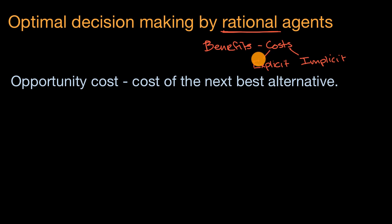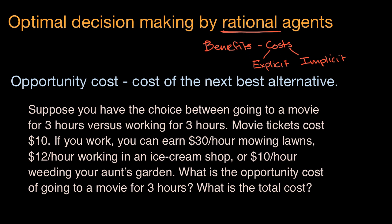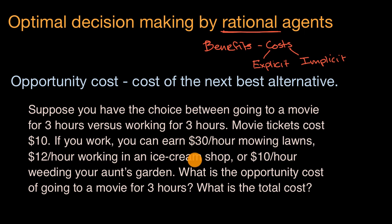To make this more tangible, let's look at that exact example. Suppose you have the choice between going to a movie for three hours versus working for three hours. Movie tickets cost $10. If you work, you can earn $30 an hour mowing lawns, $12 an hour working in an ice cream shop, or $10 an hour weeding your aunt's garden. What is the opportunity cost of going to a movie for three hours, and what is the total cost?